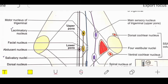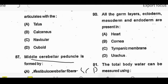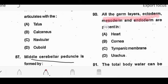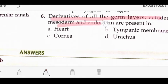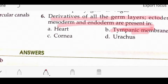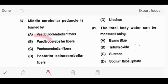The last anatomy question: all three germ cell layers - ectoderm, mesoderm, and endoderm - are present in which organ? Options are: heart, cornea, tympanic membrane, or urachus. The answer is the tympanic membrane. This comes directly from the literature as a text-based question in embryology. The tympanic membrane is made up of all three germ layers - simply remember this fact.